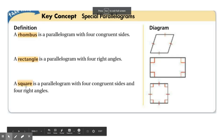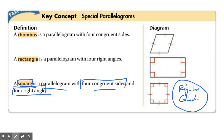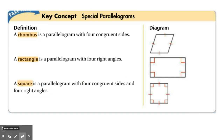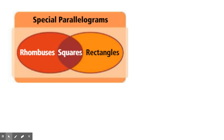Last but not least is a square. A square is a parallelogram with both four congruent sides and four right angles. It is the marriage of a rhombus and a rectangle — I always say if they had a baby, they would get a square. A square is a regular quadrilateral, so it is pretty much the most perfect of the quadrilaterals. Keep in mind that if something is a rhombus and a rectangle, then it's a square.